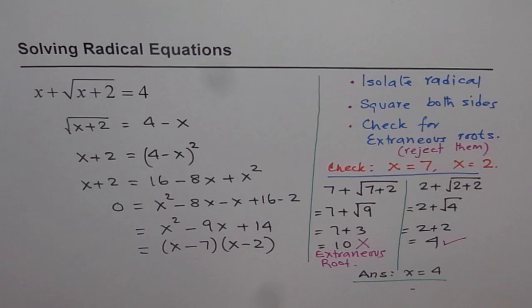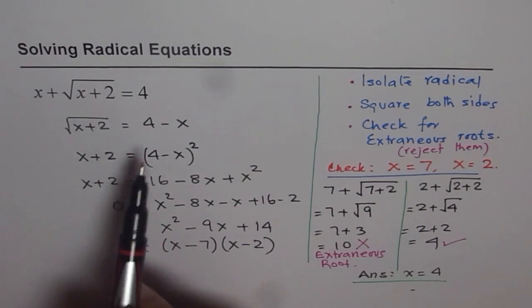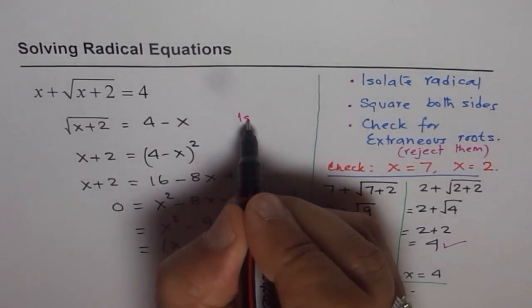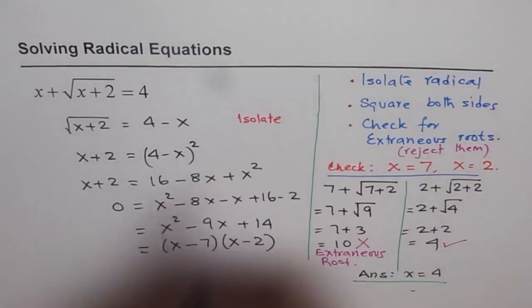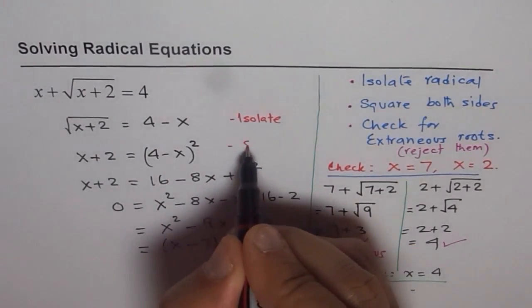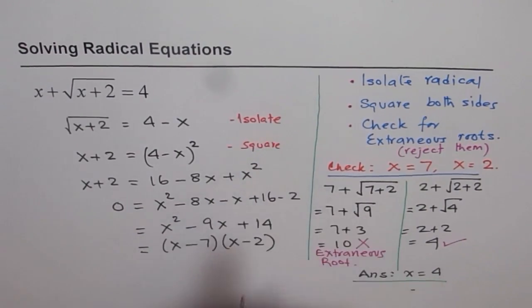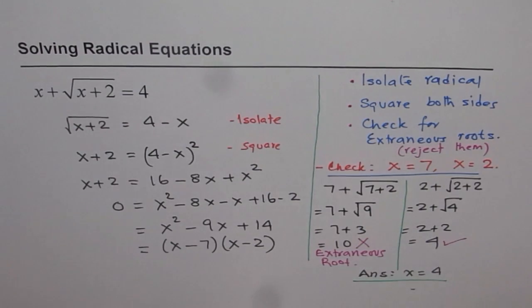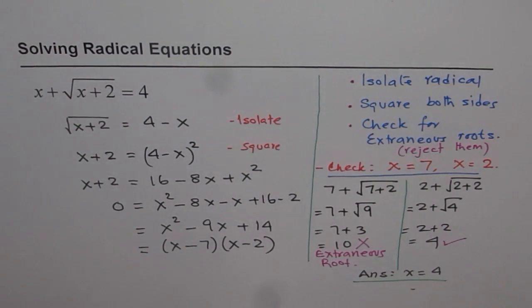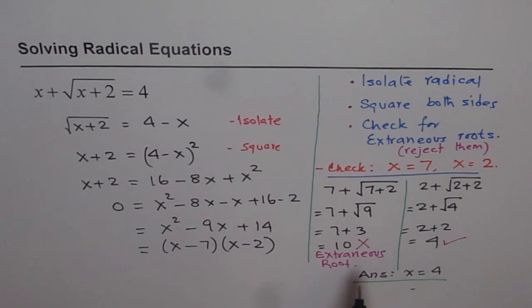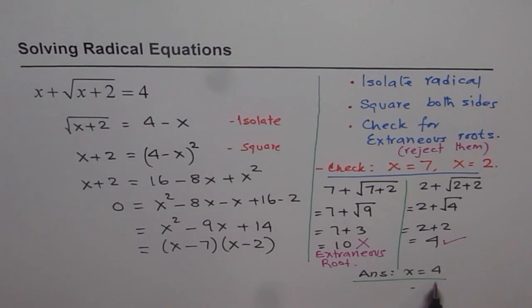I hope that makes things absolutely clear. So, go through it once again. First step as you have seen here is isolate radical. Second is square both sides. And third is check the solution. Once you have checked the solution, discard the extraneous root and write down your solution. I hope you appreciate it. Thank you.